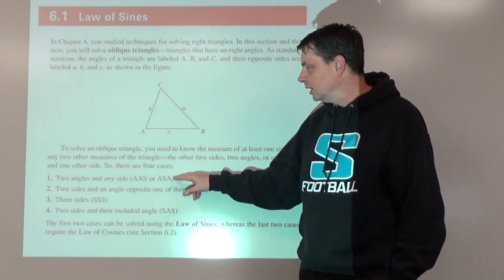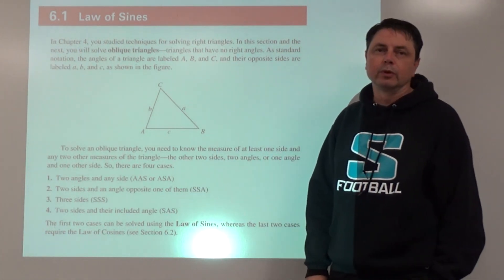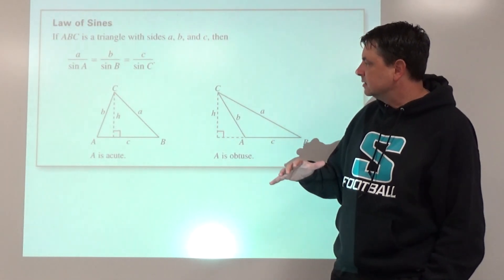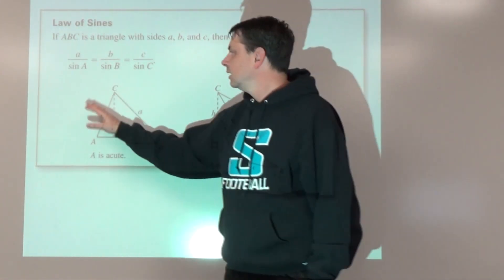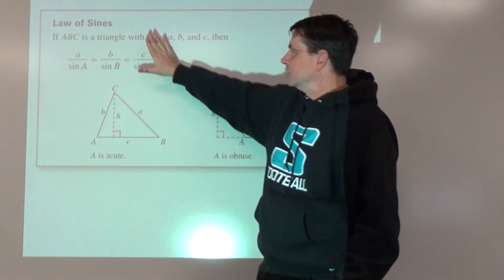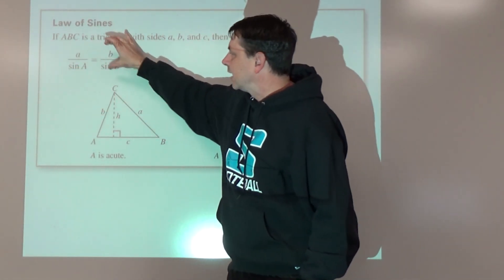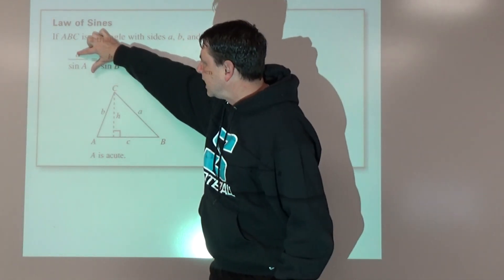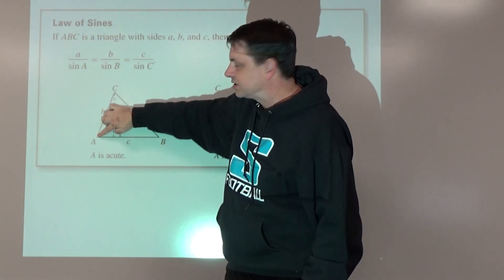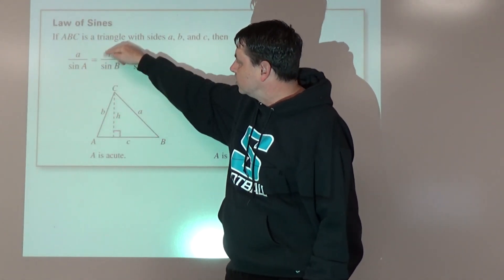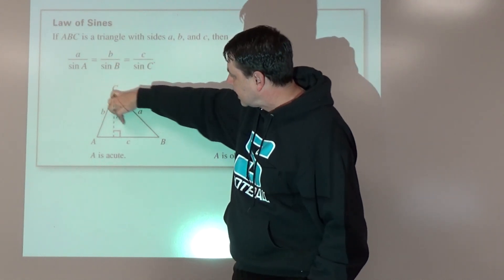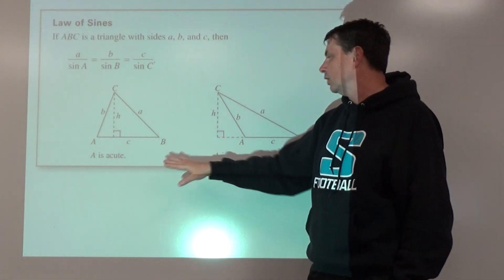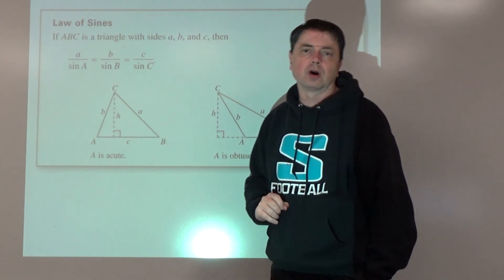The easy one is number one; the more difficult is number two. The Law of Sines states that — and we wouldn't ever really list all three — it's usually just one fraction equals another fraction, a proportion. One side length divided by the sine of the opposite angle is equal to another side length divided by the sine of its opposite angle. It doesn't really matter if the triangle is acute or obtuse.